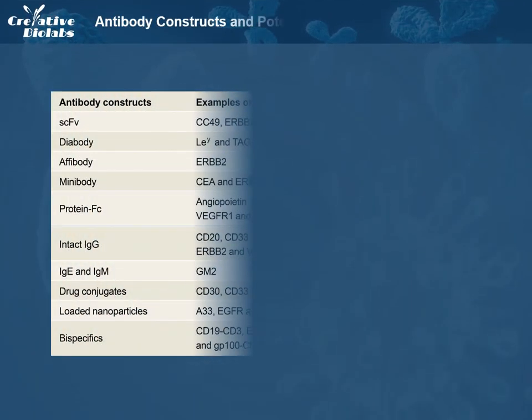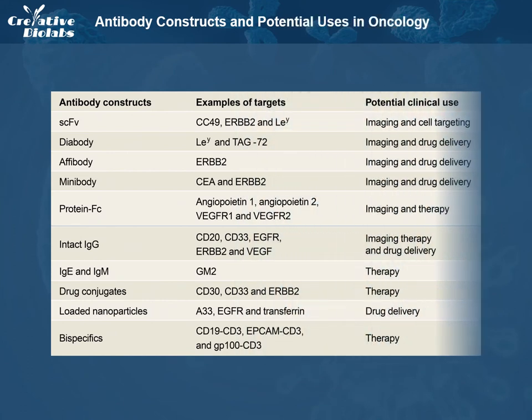Although conventional IgG isotypes are the mainstream antibodies for cancer therapies, numerous recombinant and engineered forms of antibodies, such as single-chain antibody fragment, minibody, diabody, single-domain antibody, and bispecific antibody, have been developed and show excellent therapeutic efficacy.